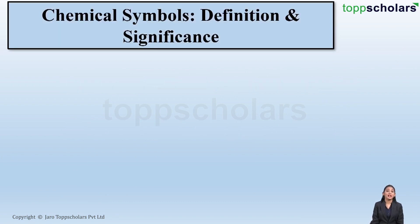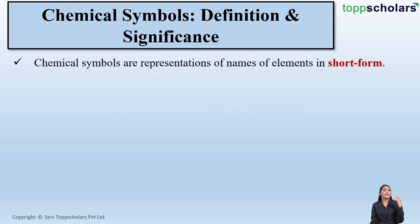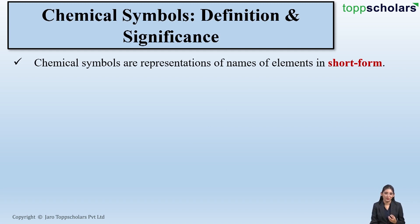Chemical symbols — what are chemical symbols? Now, friends, symbols are generally used to represent something in short forms. Similarly, chemical symbols are used to represent the names of the elements in short form.